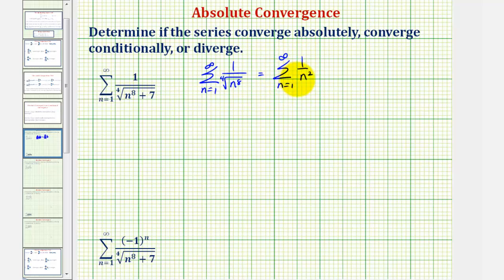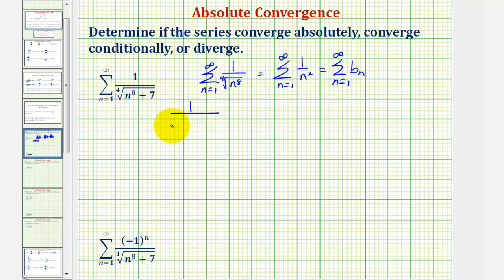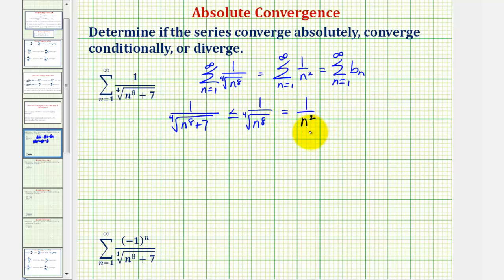Since we know this series converges, we let it be the summation of b sub n, and the original series is the summation of a sub n. Since this series converges, by the direct comparison test, if we can show that one divided by the fourth root of n to the eighth plus seven is less than or equal to b sub n — which is one divided by the fourth root of n to the eighth, or simplified, one divided by n squared — this is enough to show the series is convergent and absolutely convergent.